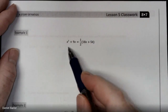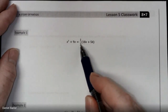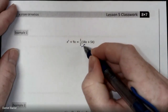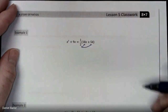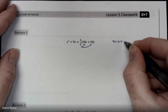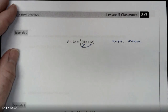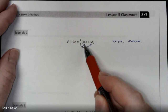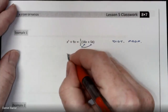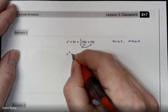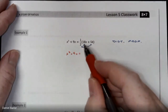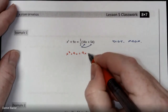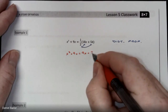Looking at Example 1, I see a number outside parentheses, so I'm going to use the distributive property to simplify. I'll multiply one half times everything inside the parentheses. The left side of the equation stays the same, and I do one half times 18x, which is 9x, plus one half times 54, which is 27.